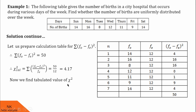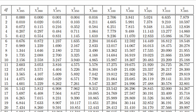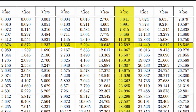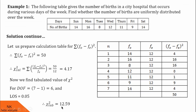Now, we proceed to find the tabulated value of chi-square. For that, we need degrees of freedom. Since this data is single categorical and having only seven values, its degrees of freedom would be 7 minus 1, which is 6. Now, we find the tabulated value of chi-square at 6 degrees of freedom and taking LOS 5% using the chi-square table. You search degrees of freedom 6 and search for 0.05 LOS, that is 5% LOS. The corresponding value is 12.592. We found chi-square tabulated value is 12.59.